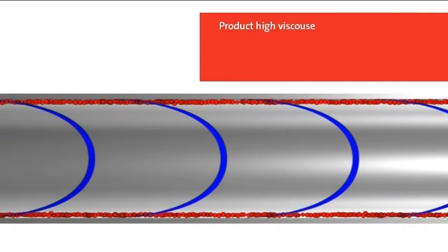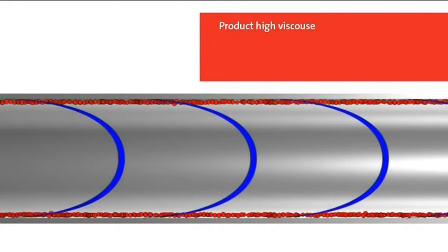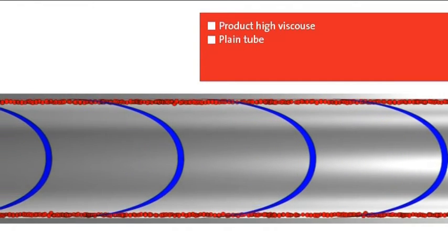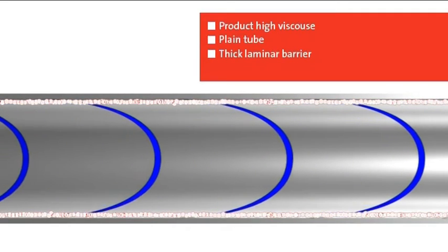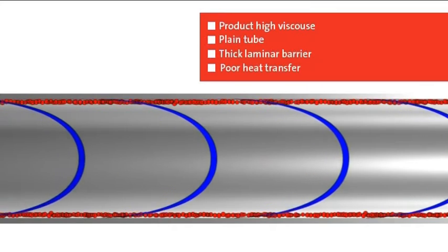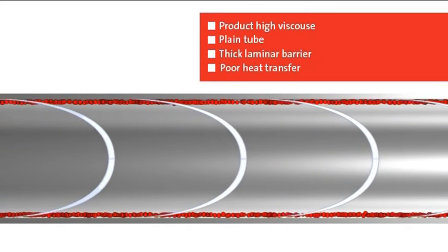Now we see a high-viscous product in a plain tube and a very thick laminar barrier. The heat transfer is here significantly poorer by reason of different velocities and different temperature layers. The poor heat transfer achieved means that the product is not being adequately treated.